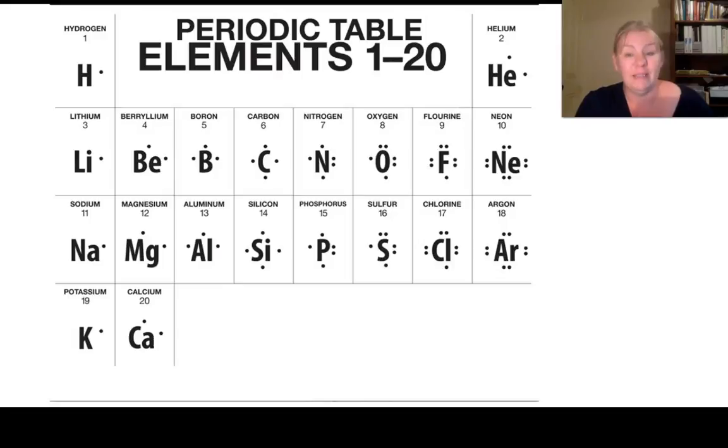Here is the first 20 elements, and we would like you to know all of those. So each of those elements are shown here with their valence electrons, and they are dotted around.